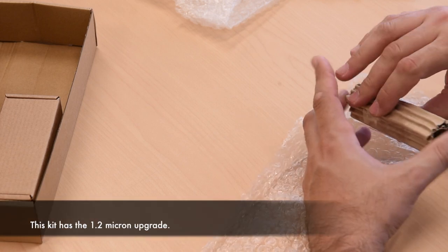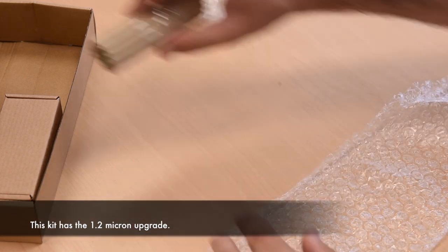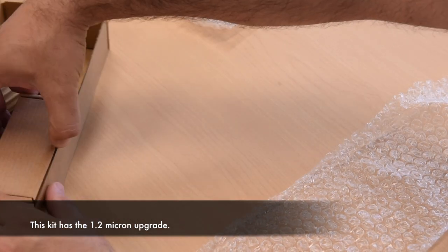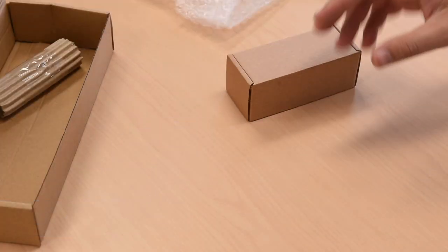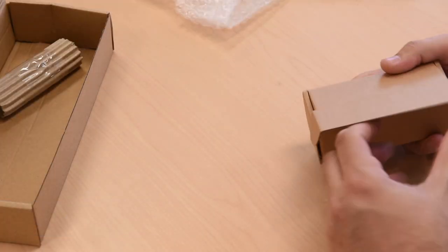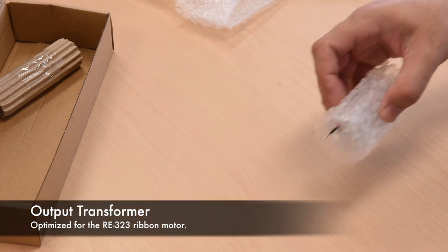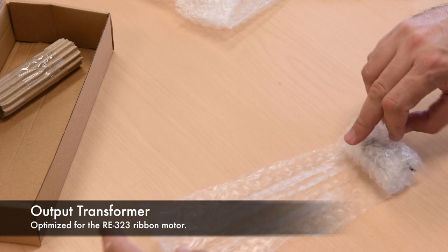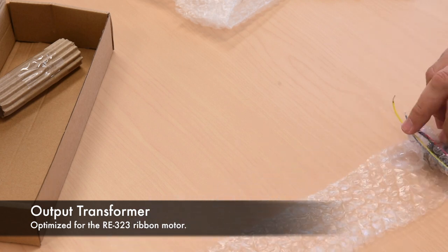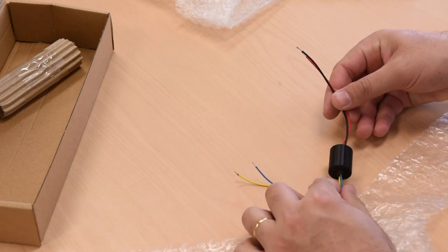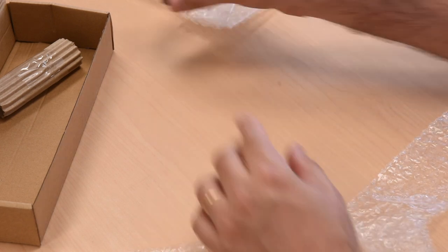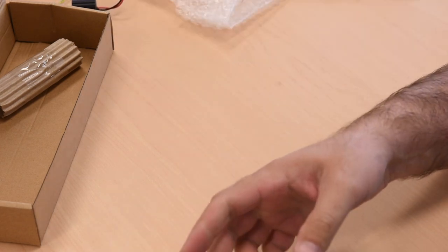I chose the 1.2 micron ribbon for this build, which, due to its lower mass, will produce transient details with better efficiency and less distortion. The transformer steps up the very low signal from the ribbon, typically in the microvolt range, and increases that signal by a magnitude of about 35 or 40 times higher. It also matches the impedance of the ribbon to that of the microphone preamplifier.